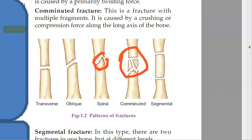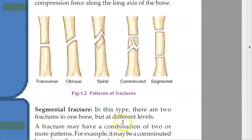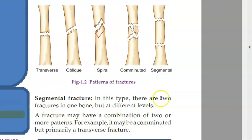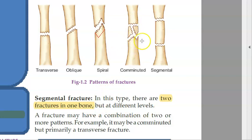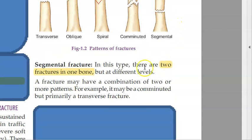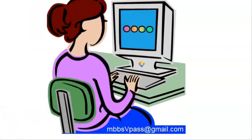There is also segmental fracture. Segmental means two fractures in one bone at different levels — so the bone has become segmented. This is different from comminuted, which has multiple pieces. Okay guys, you have now learned the classification of fractures. There are many other things like fractures with special names and other ways of classifying them. Bye-bye.